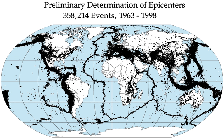Soil liquefaction occurs when, because of the shaking, water-saturated granular material temporarily loses its strength and transforms from a solid to a liquid. Soil liquefaction may cause rigid structures, like buildings and bridges, to tilt or sink into the liquefied deposits. For example, in the 1964 Alaska earthquake, soil liquefaction caused many buildings to sink into the ground, eventually collapsing upon themselves.